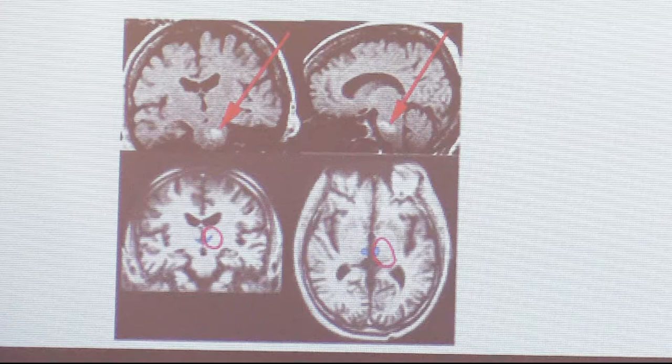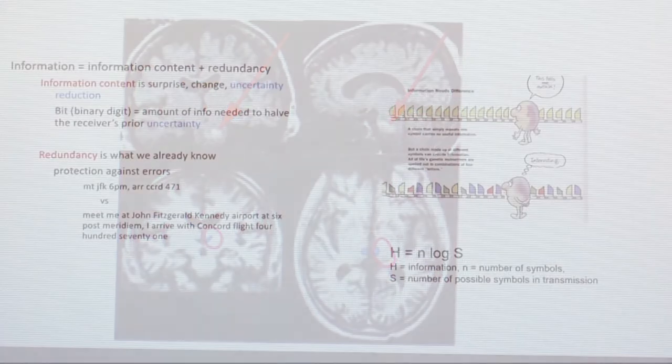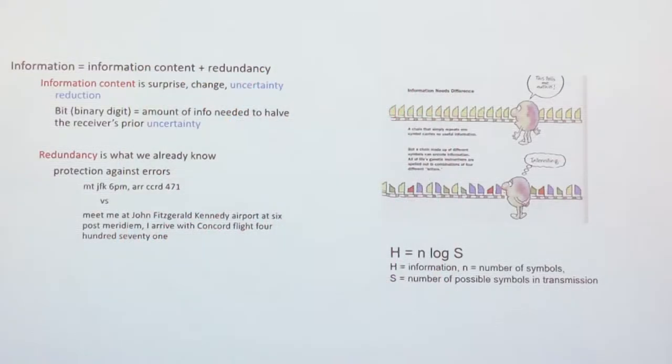Everything that is important — such as our self-representational system — is redundant. We'll have it on both sides, even though most commonly the left side is more active than the right. You will have a redundant system so that if something goes wrong with one part, the other part can take over. So redundancy is very important.